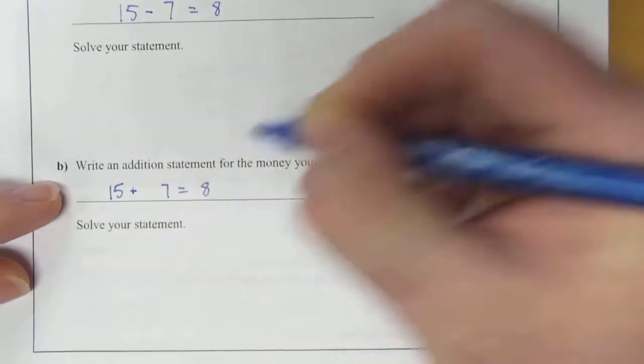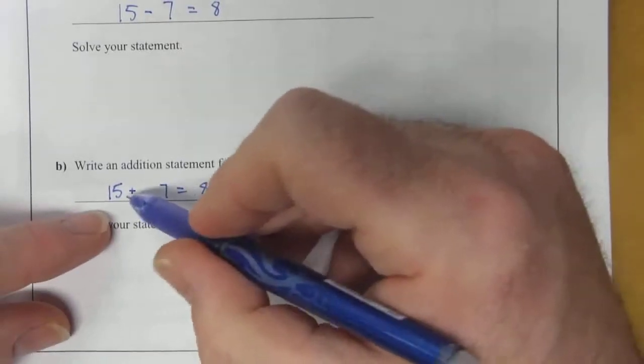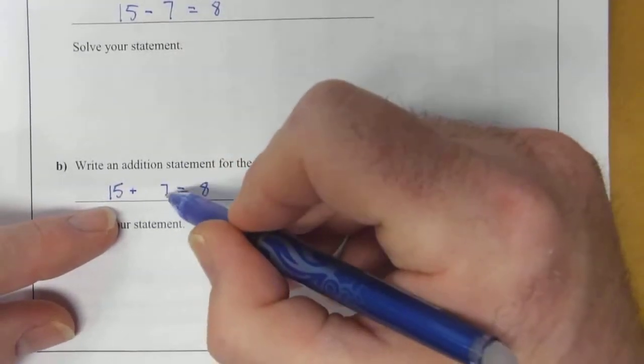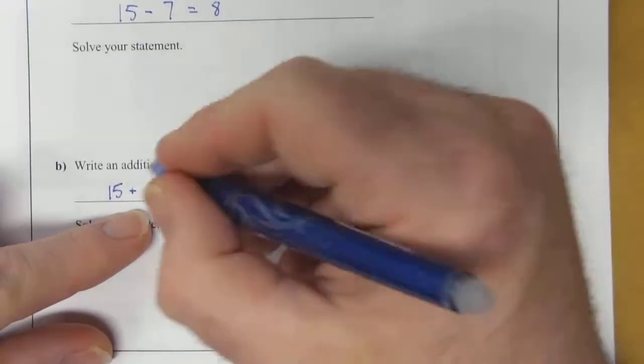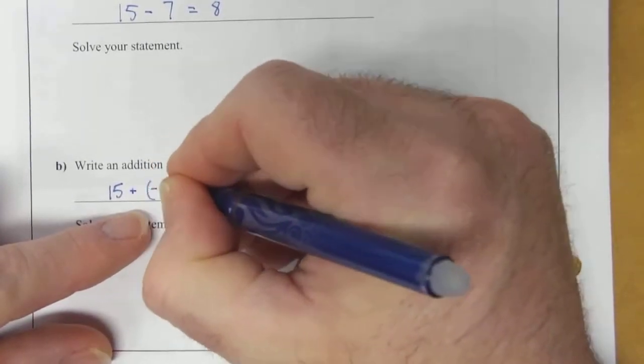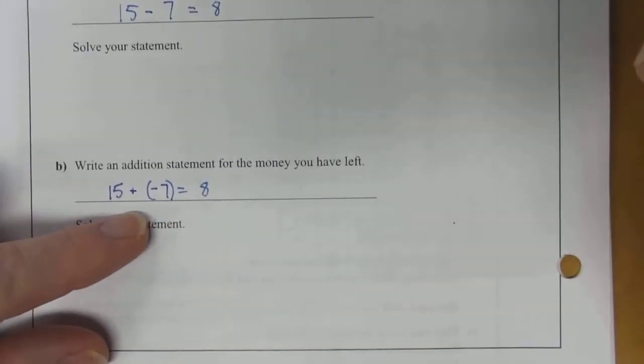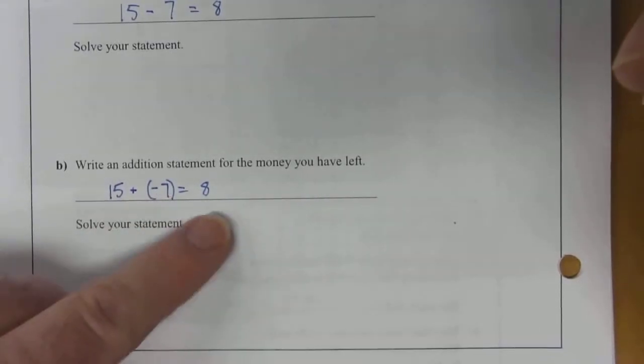So what you can do is change this to a negative 7. So 15 plus negative 7 still gives you an answer of 8. You still have $8 left over.